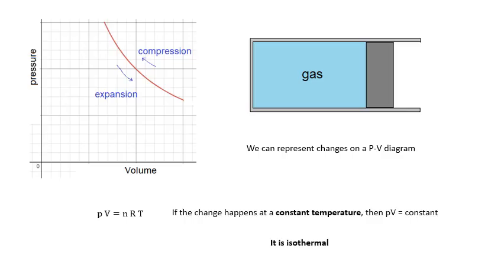Now if the temperature is constant, then pV equals a constant, as in pV equals nRT. So if T is constant, then pV is constant, and this kind of process we say is isothermal. So remember, isothermal means constant temperature.